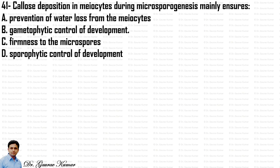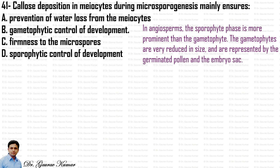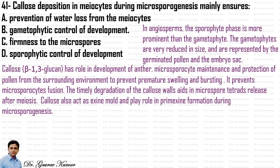Callose deposition in microsporocytes during microsporogenesis mainly ensures gametophytic control of development. Callose, that is beta-1,3-glucan, has a role in development of the anther and microsporocyte maintenance, preventing premature swelling and bursting of the pollen from the surrounding environment. It also prevents microsporocyte fusion. The timely degradation of the callose wall aids in microspore tetrad release after meiosis. Callose also acts as an exine mold and plays a role in primexine formation during microsporogenesis. So the answer is gametophytic control of development.